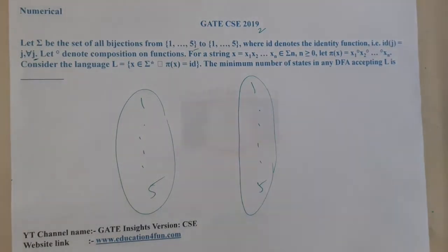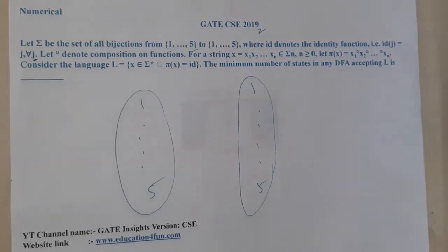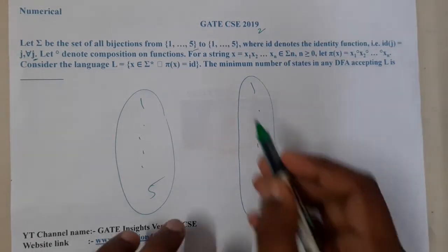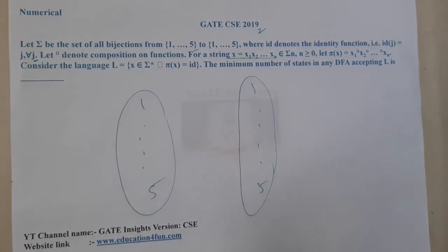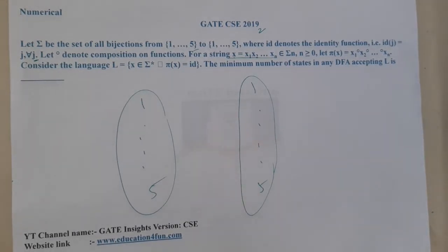It's represented in that way only. Let zero denote the complement. That symbol represents a complement. It denotes complementation on functions. For a string x1, x2, and so on up to xn, x belongs to sigma^n where n ≥ 0, let π(x) = x complement, x2 complement, and so on up to xn.